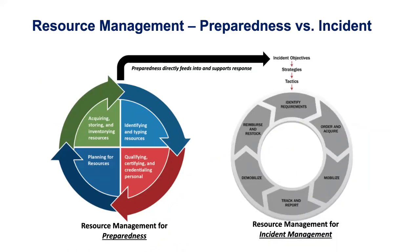It's important to define what we're talking about with resource management preparedness versus the entire resource management cycle. On the left is a graphic from the supplemental NIMS guide showing the four phases of resource management preparedness. On the right is resource management for incident management — define requirements, acquire, mobilize, track, demobilize. We're focused on the preparedness side — everything left of the incident response. This allows provider organizations to understand expectations of a resource by its capabilities, and allows receiving organizations to receive something pre-assembled and pre-determined that will meet minimum capabilities for their specific needs.